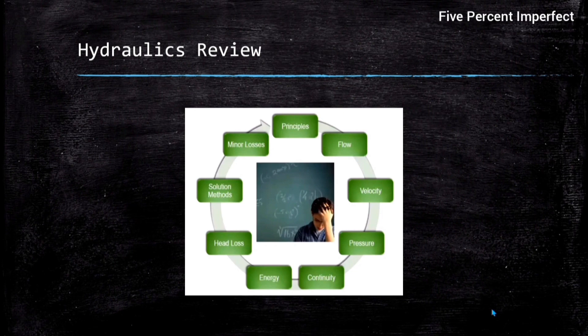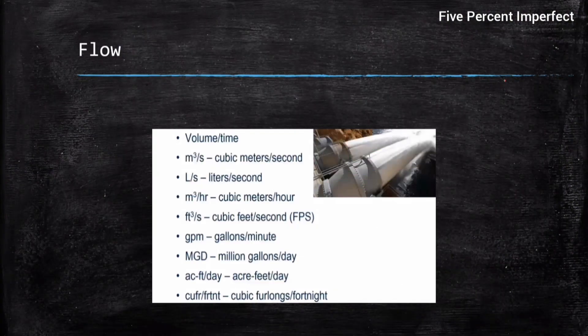We are going to learn about various design parameters such as flow, velocity, pressure, the equations of continuity, energy, head loss, and various solution methods such as Hazen-Williams, Darcy-Weisbach, and Manning's. We will also learn about minor losses and how these are calculated in WaterGEMS, and then the various solving methods.